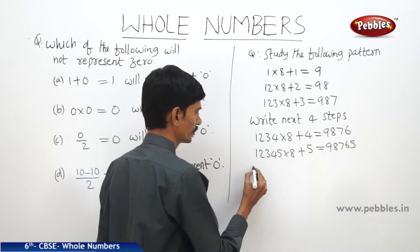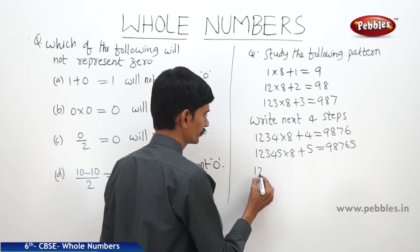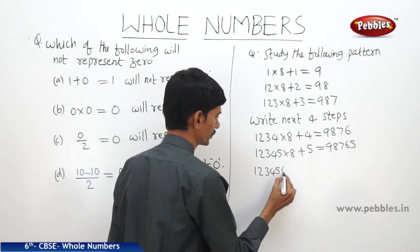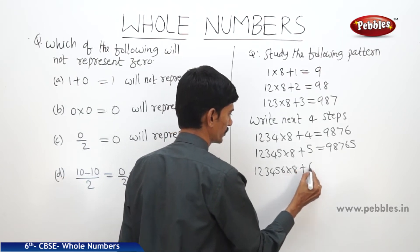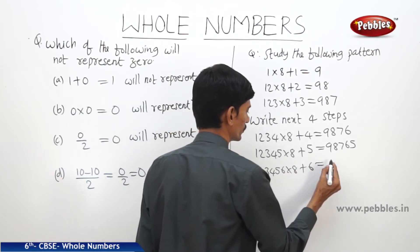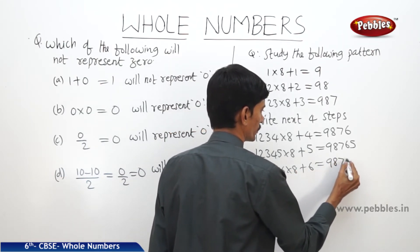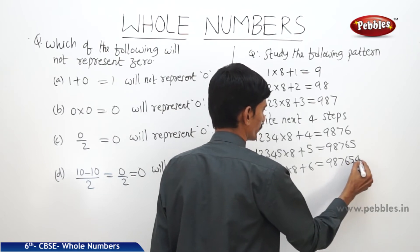The next step is 123456 into 8 plus 6 equals 987654.